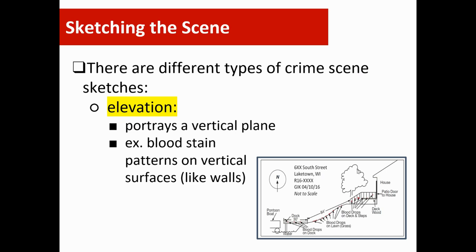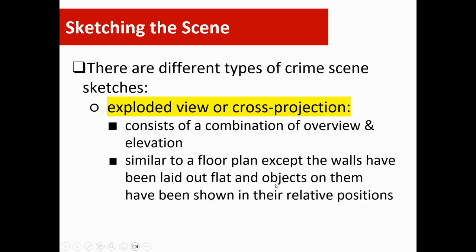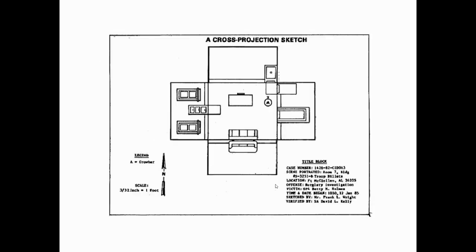Another type is an elevation sketch, done when we have uneven ground or a landscape with different levels. This portrays a vertical plane, like how you'd draw it standing parallel to the scene looking at it. You'll have measurements, important information, and directionality. The third type is an exploded view or cross projection view, which consists of a combination of overview and elevation. It's similar to a floor plan, except the walls have been laid out flat.